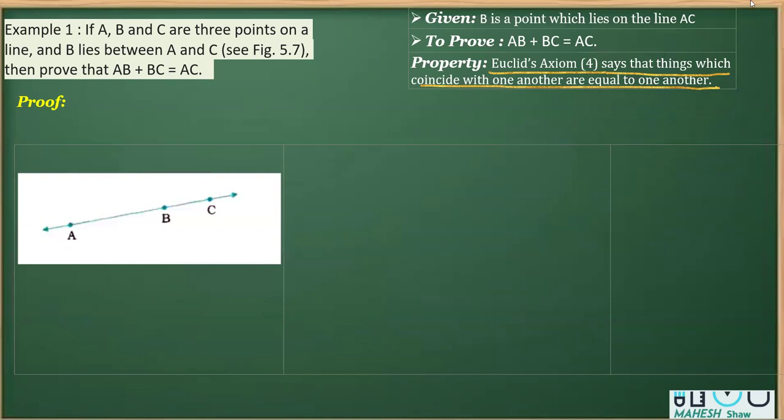So what does it mean? First of all, we are given that A, B, C are three points on a line. Clearly, we have a line and the points A, B, and C are on the line.